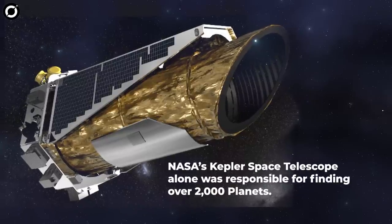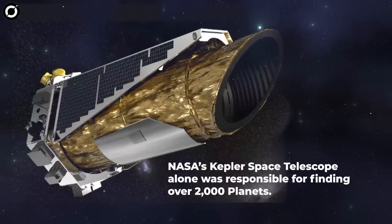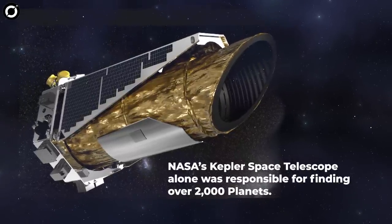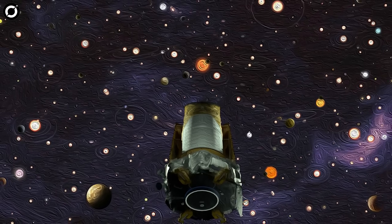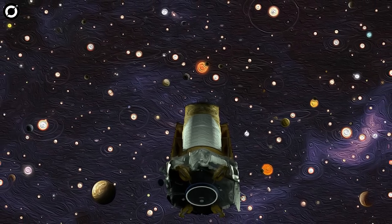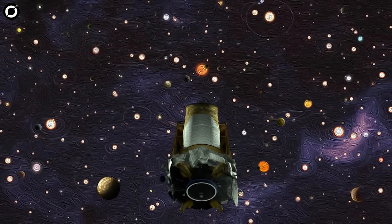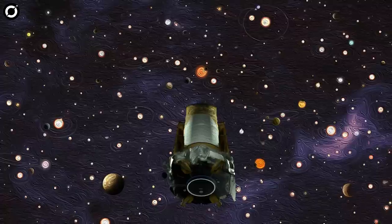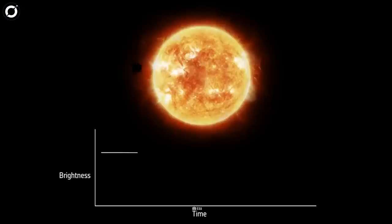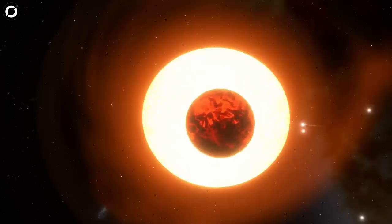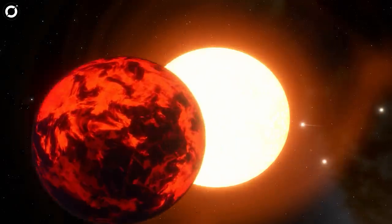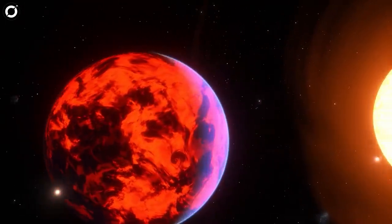NASA's Kepler Space Telescope alone was responsible for finding over 2,000. It did so by watching the stars in a patch of the sky for weeks, months, or even years at a time. When a planet that goes around one of these stars crosses against the face of its star, it casts a small but definite shadow in the starlight. These shadows are recorded and can be used to calculate the size of the planet.